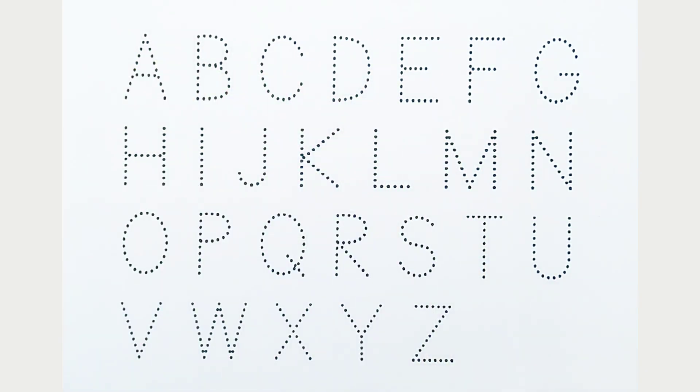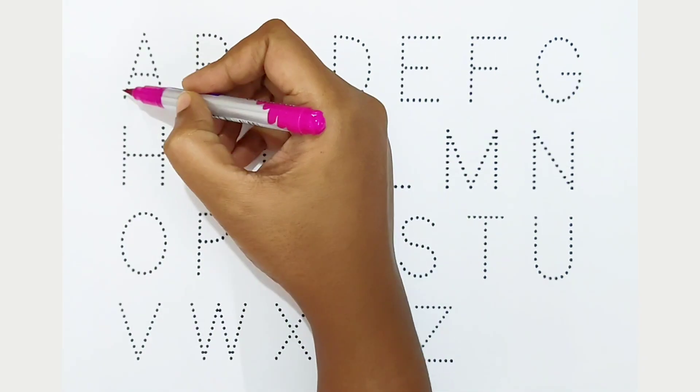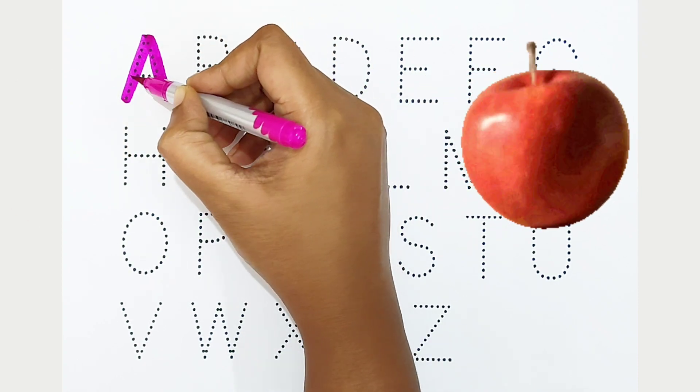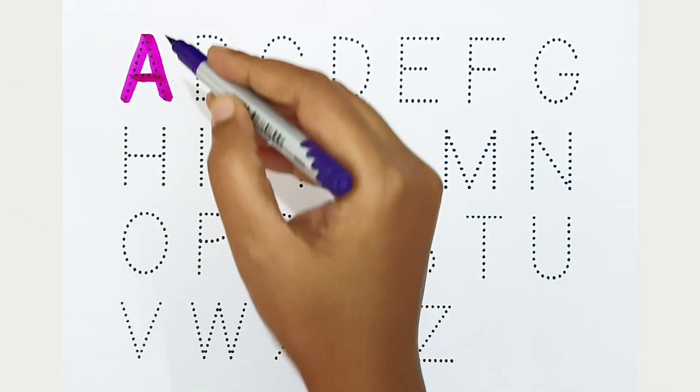Let's begin. A - dark pink color. A is for apple. B - violet color.